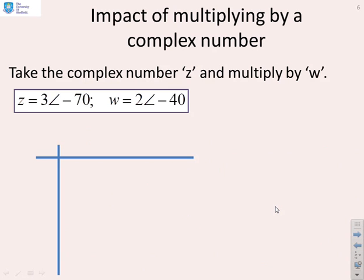Let's do a number of simple examples so you get the picture. We're going to take a complex number z, here it is, 3 arg minus 70, and we're going to multiply it by w. We want to interpret that as a rotation and a scaling.